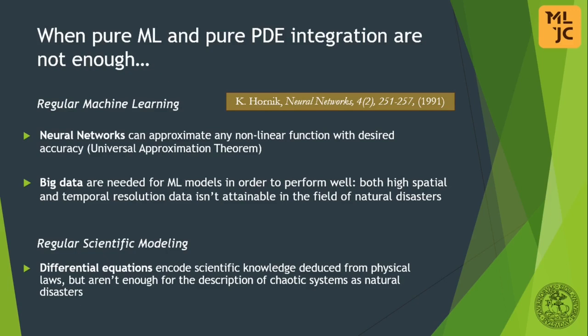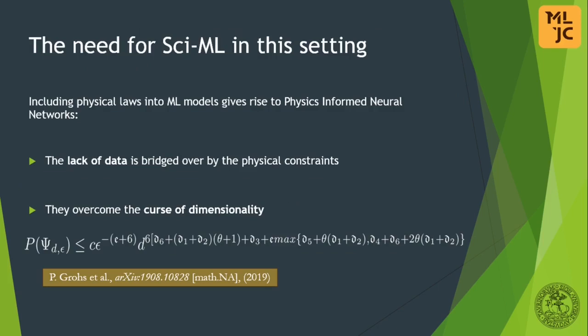However, neural networks need a lot of data in order to perform well — a situation which is not easily attained for natural disasters. On the other hand, regular scientific modeling uses the physical information of a system encoded as differential equations, but this method is subject to limitations when applied to chaotic systems such as natural disasters. In order to exploit the strength of both traditional and machine learning approaches, we opted for the physics-informed neural networks model.